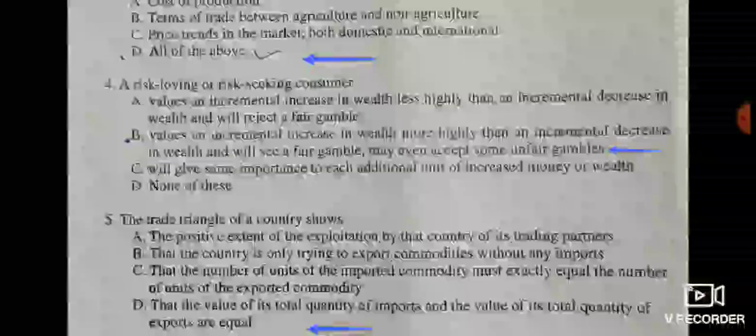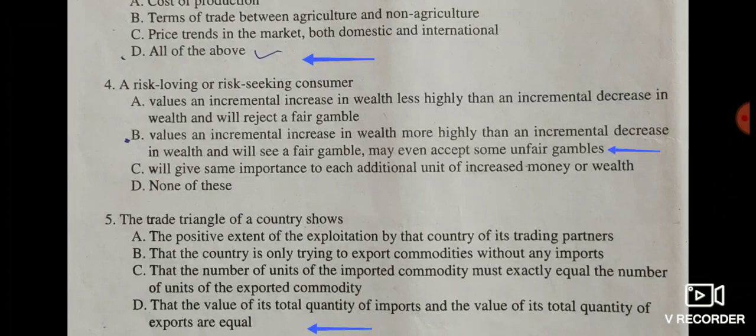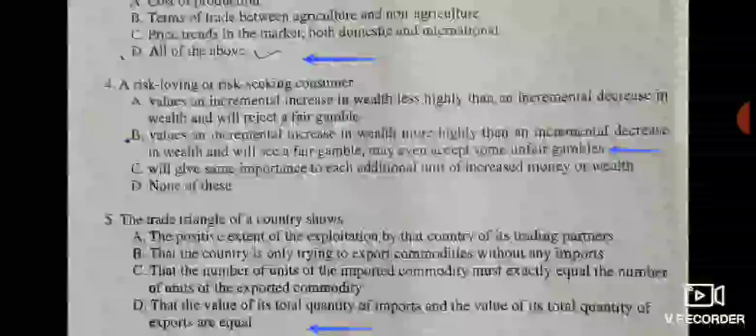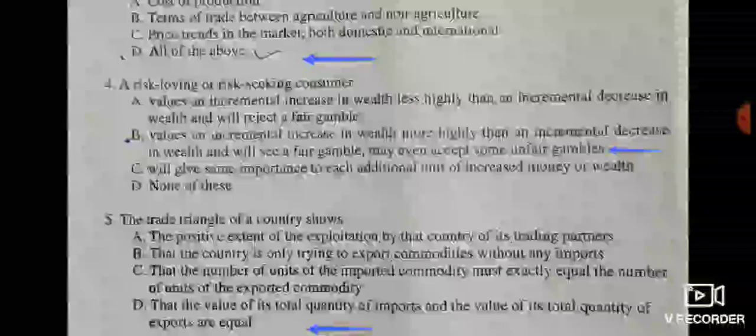Question four: a risk-loving or risk-seeking consumer — given options are: values an incremental increase in wealth less highly than a decrease and will reject a fair gamble; values an incremental increase in wealth more highly than a decrease and will seek a fair gamble and may even accept some unfair gamble; gives same importance to each additional unit of wealth; or none of these. The correct answer is option B.